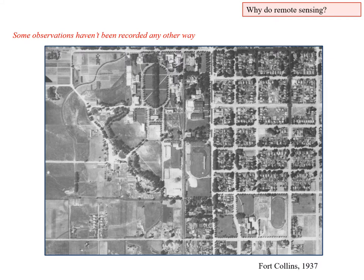Some observations just haven't been recorded any other way. This is the CSU campus and adjacent residential area to the east in 1937 — there are very few or no maps of this detail available for that year. Near the top edge you can see the oval with a series of trees down the center; those trees are still there today, though much larger, as are the smaller trees around the edge of the oval.